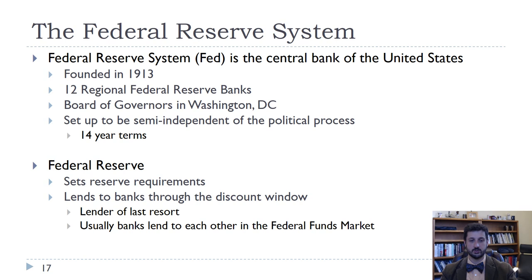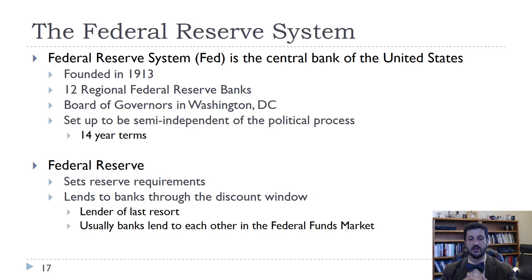The Federal Reserve sets reserve requirements — how much banks have to keep of their deposits, either as currency or as reserves. They're allowed to lend out the rest. So when you deposit $1,000 into the bank, they may only have to keep 10%, or $100, and then they can take the other $900 and make a loan. This is how they make a profit.